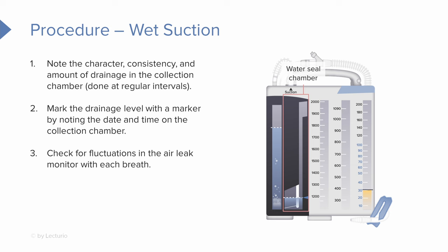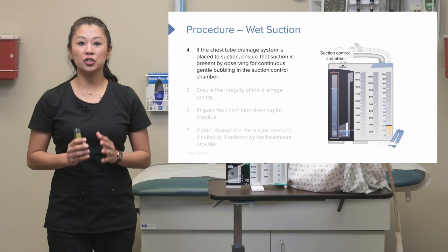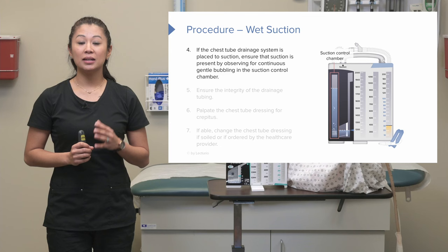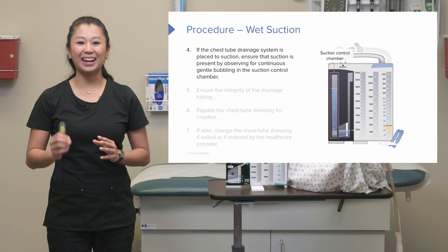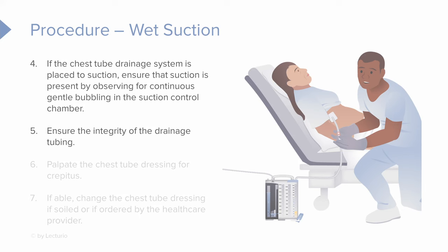Don't forget to check for fluctuations in the air leak monitor with each breath — this is a really important piece of chest tube monitoring care. If there's any air leak, this is where we're going to see it, so look for bubbling here. Now if the chest tube drainage system is placed to suction, ensure that suction is present. On a wet suction system, suction is controlled by the level of water, and we should see a little bit of bubbling in the suction control chamber — but not in the air leak monitor.